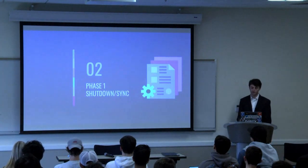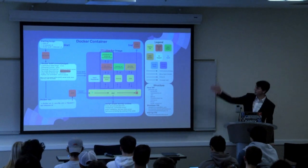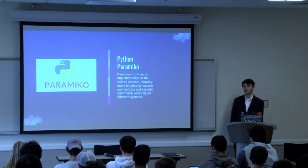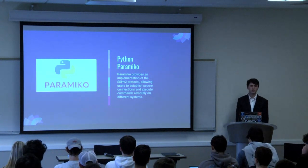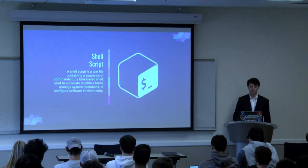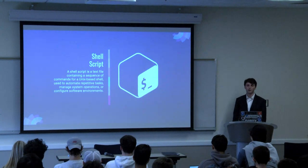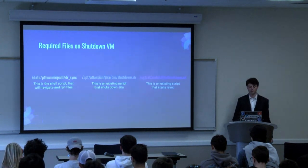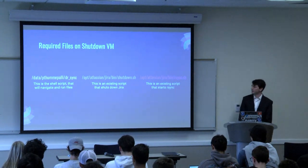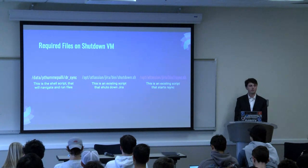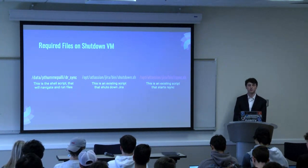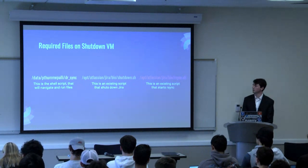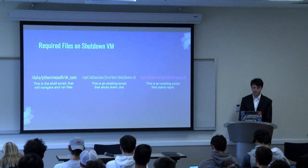Going into phase one, which is the shutdown sync phase. For this phase I used a Python library called Paramiko, which enables the establishment of SSH connections. This connects directly with one of the VMs and runs a shell script — a sequence of commands used to automate repetitive tasks and manage operations within a server. Three files are required: DR sync, which is the shell script that takes over the shutdown process from Python; and then DR sync runs the next two files, shutdown.sh and rsync.sh, which are self-explanatory — either shutting down or running the rsync process.